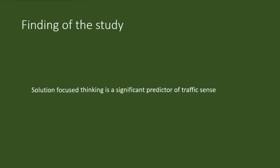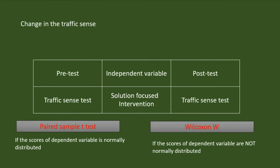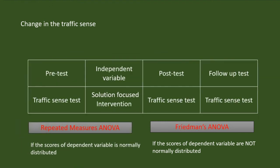Now imagine the finding of my study is that solution-focused thinking is a significant predictor of traffic sense. In another study, I took a pre-test of traffic sense, gave a solution-focused intervention, and did a post-test. I can find out the effect of intervention by comparing the pre-test and post-test scores using a paired samples T-test if scores are normally distributed; otherwise, I may use Wilcoxon W. After the post-test, if I have a follow-up test, I will go for repeated measures ANOVA if scores are normally distributed; otherwise, I will use Friedman's ANOVA.